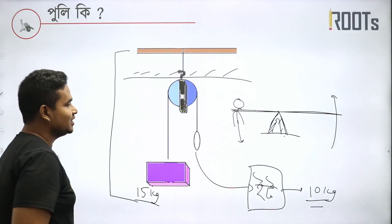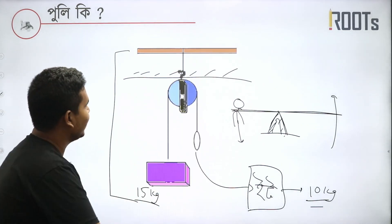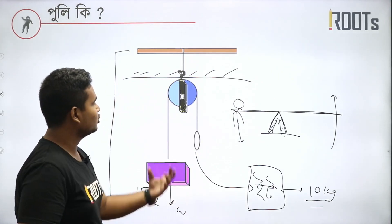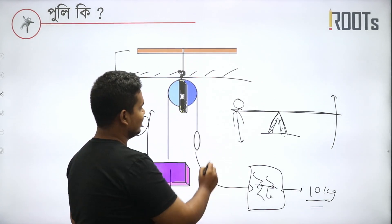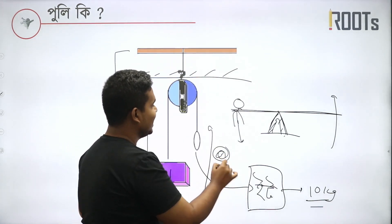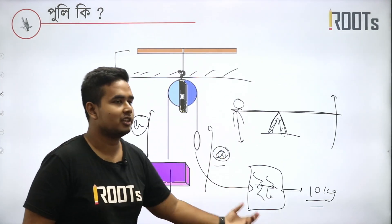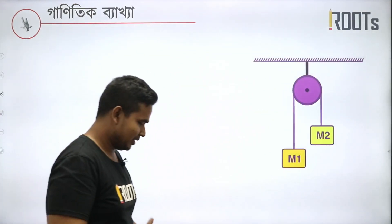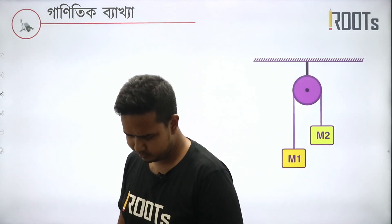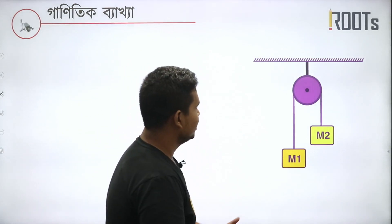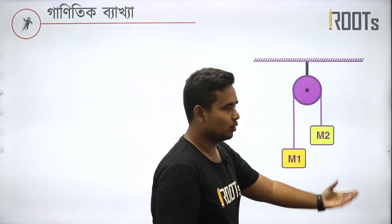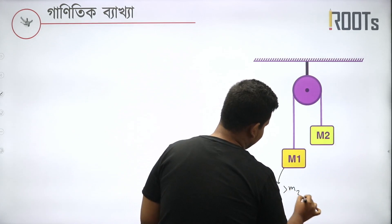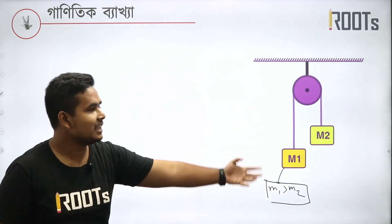The pulley is an open system in physics. Where you look at the weights, where you look at the acceleration. If you look at the physics, physics is going to be covered. This is the fact that the pulley is going to be included in physics. Now, the pulley is going to be back.